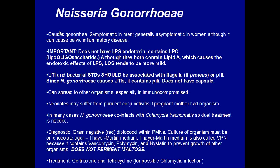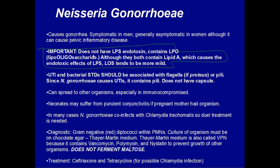Neisseria gonorrhoeae obviously causes gonorrhea. It is symptomatic in men — patients present with painful urination and pus discharge from the penis. You can think of Neisseria gonorrhoeae or chlamydia. It is generally asymptomatic in women, although it can develop into pelvic inflammatory disease. An important and unique feature: it is gram-negative but does not have LPS; instead it has LPO, lipooligosaccharide. Although it contains lipid A — the part that causes sepsis and toxic effects — it is less toxic and more mild. It does not have LPS; it has LPO.